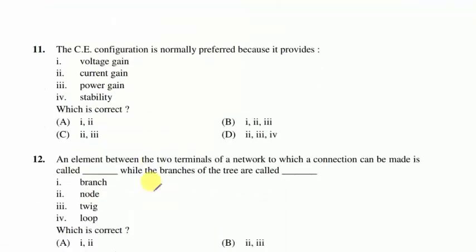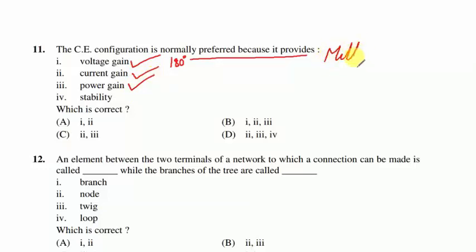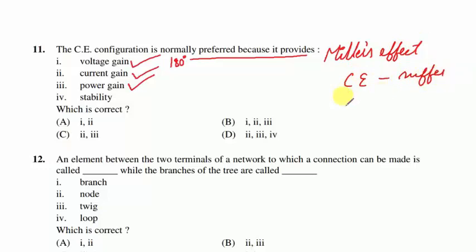Question 11: common emitter configuration is preferred because it provides voltage gain (with 180° phase shift), current gain, and power gain. However, it suffers from Miller's effect — unlike common base and common collector configurations. Stability cannot be guaranteed, so statements 1, 2, and 3 are correct — option B follows.